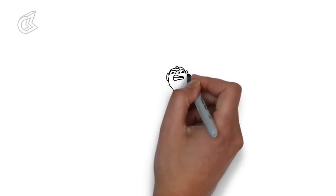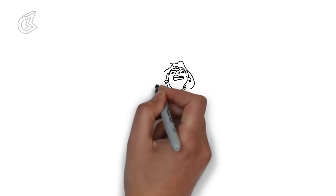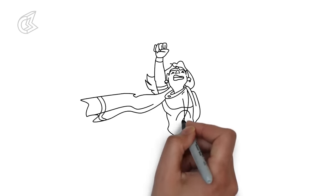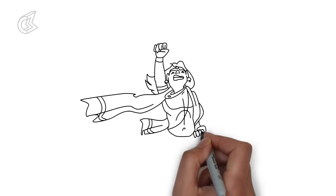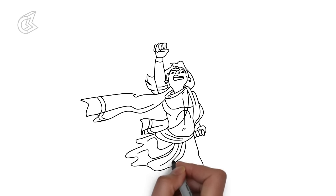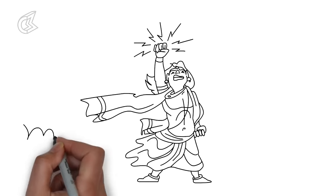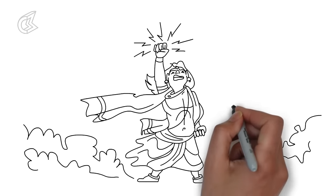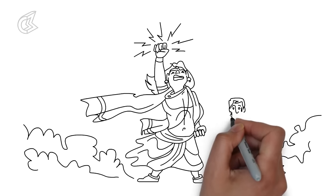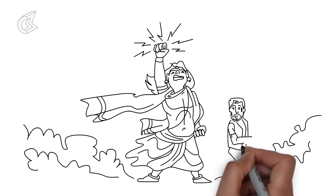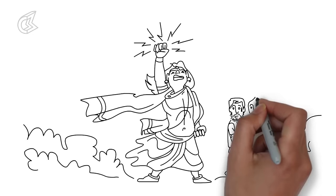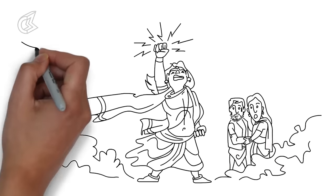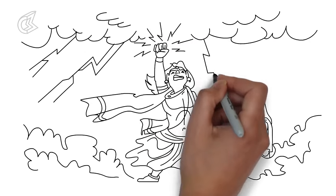It was then that Devavrat swore an oath. It was an oath that shook the earth and the heavens. It was an oath that would echo down the corridors of history and eventually bring about a war that would reshape Bharatvarsh. Devavrat vowed that he would never marry. He vowed to never father any children. Before all the gods, he swore this for the sake of his father's happiness. And thus, Devavrat the kind came to be known as Bhishma, he of the terrible oath.